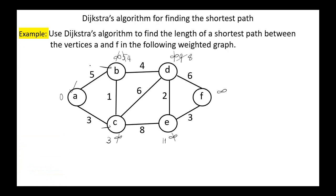Next, the remaining vertices are D, E, and F. The vertex with minimum distance is D. D is connected to F: 8 plus 6 equals 14, less than infinity, so we update this value to 14. D is connected to E: 8 plus 2 equals 10; 10 is less than 11, so we update this value to 10. Now we are done with D; we mark it as visited.